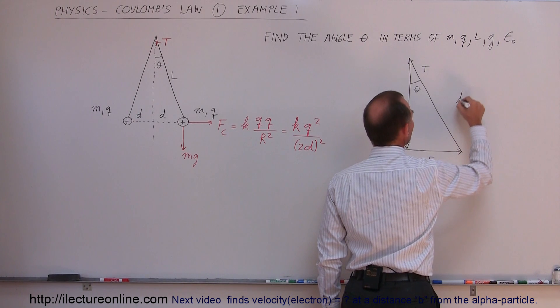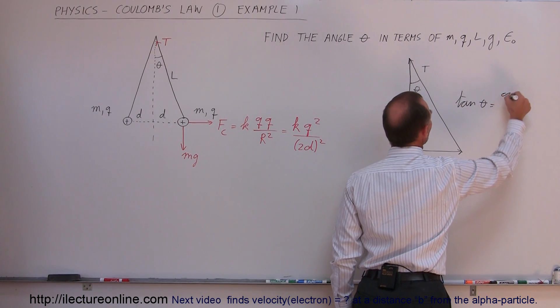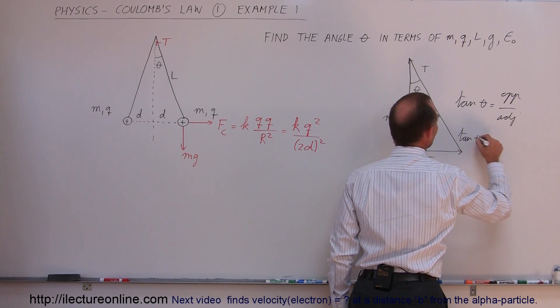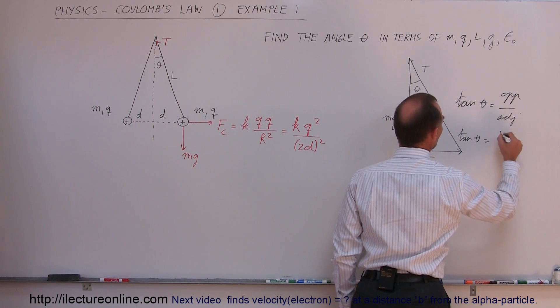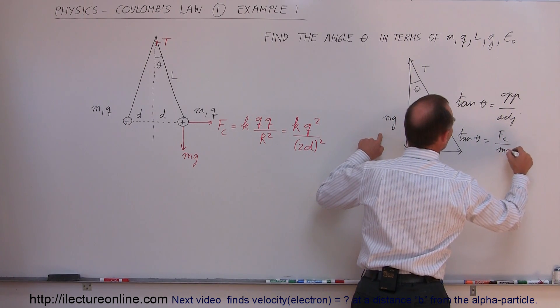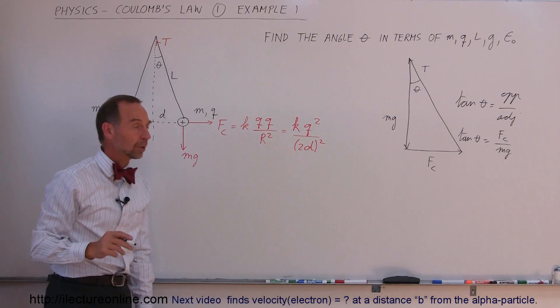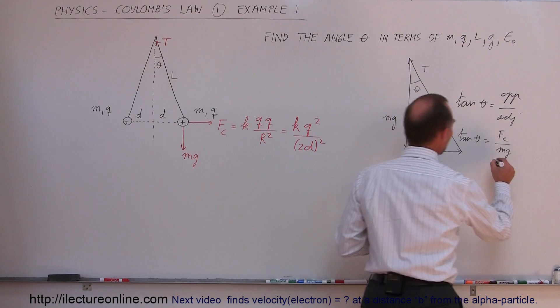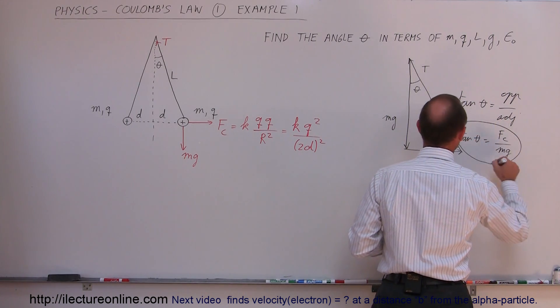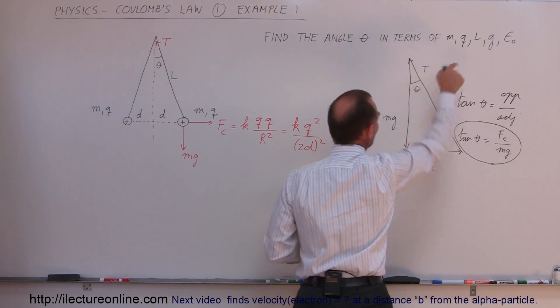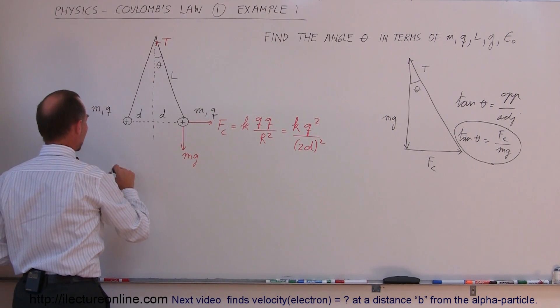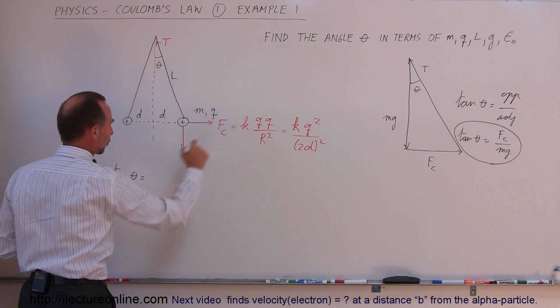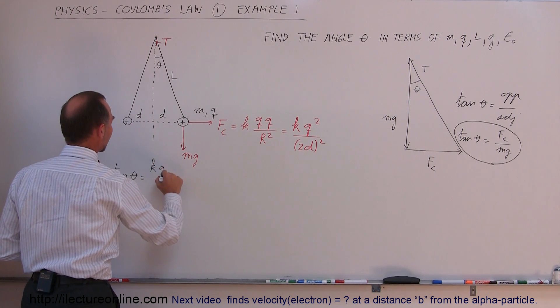Now we can see that relative to this triangle, for this angle, this is the opposite side, and this is the adjacent side. We can write that the tangent of theta is equal to the opposite side divided by the adjacent side. In this case, the tangent of theta is equal to the Coulomb force divided by the force due to gravity. Let's go ahead and take this relationship and try to develop it.